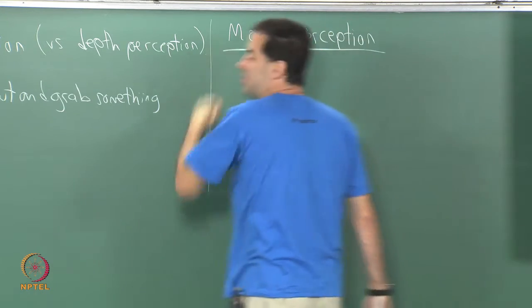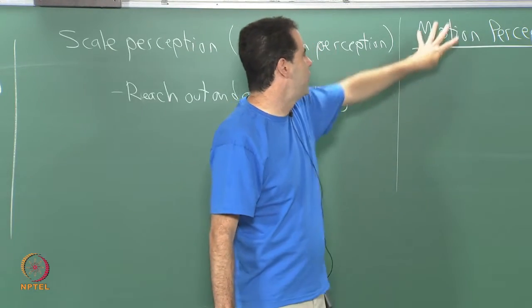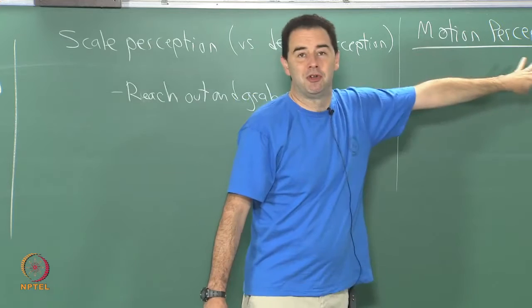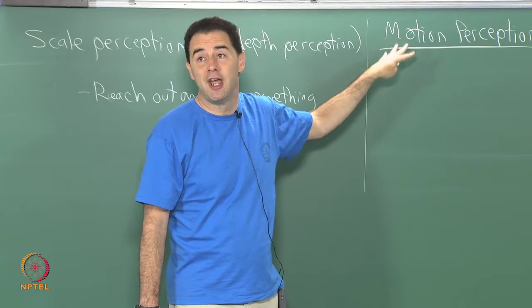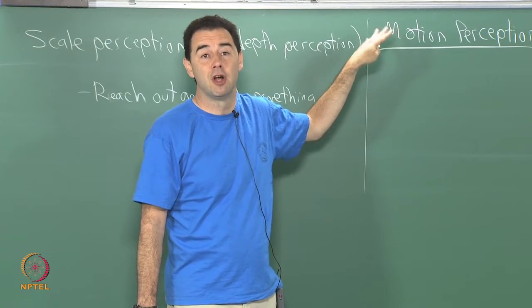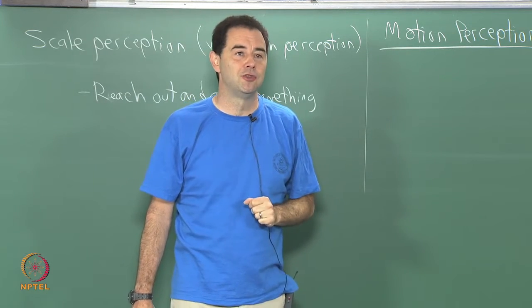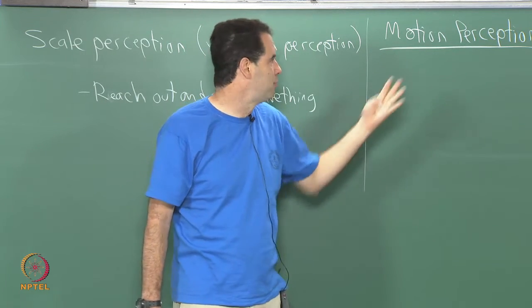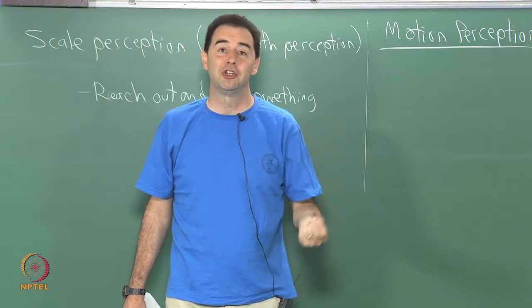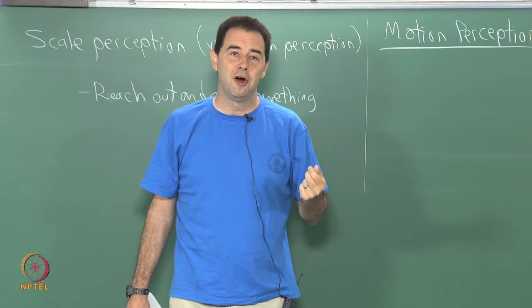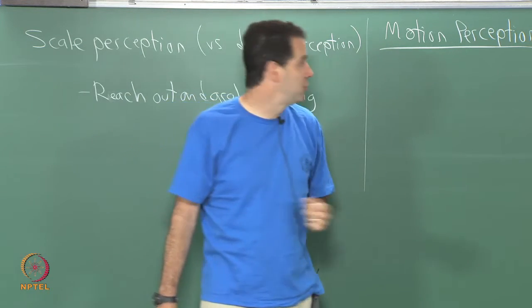Remember, it is kind of a template — there is x-perception, where x may be all sorts of things: depth, scale, motion, color, and on and on. We may also apply the same concept to hearing or touch — for example, perception of different kinds of textures.